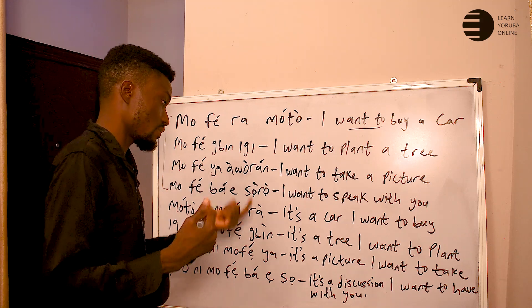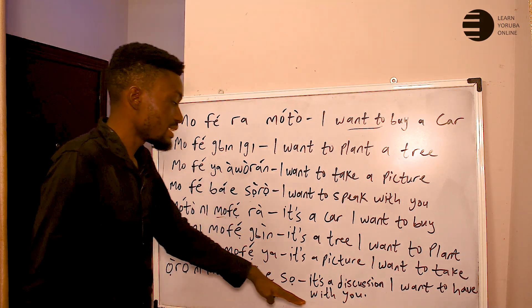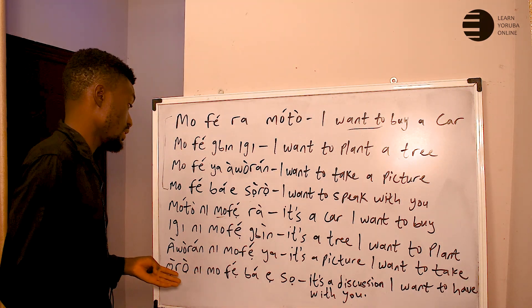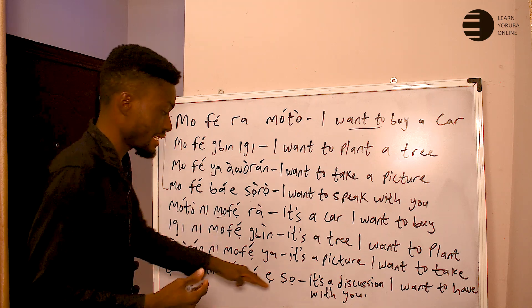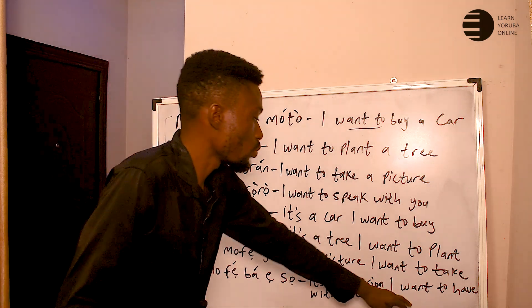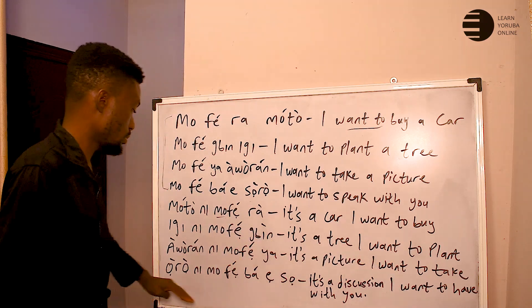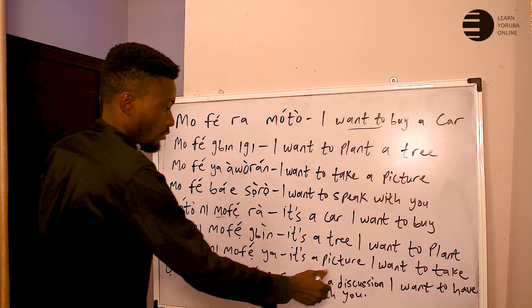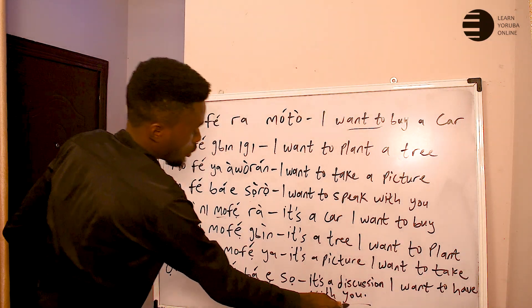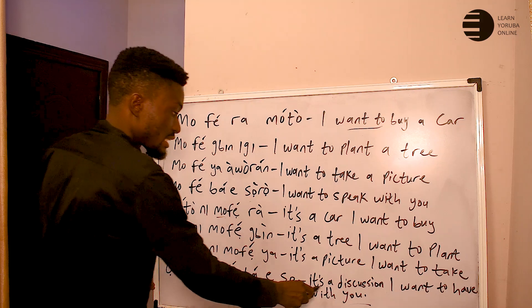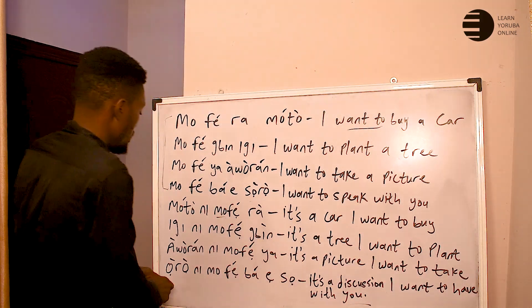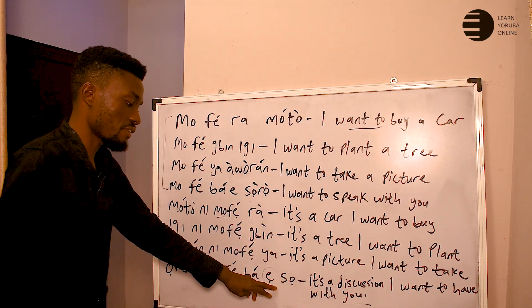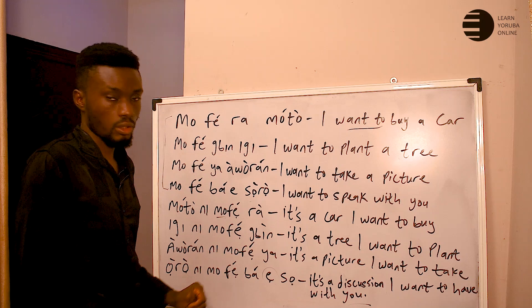'Ọrọ ni mofe ba e sọrọ' — 'it's a discussion I want to have with you.' If it is 'it's a discussion we want to have with you,' it becomes 'ọrọ ni a fẹ ba e sọrọ.' If it is 'it's a discussion we want to have with them,' it should be 'ọrọ ni a fẹ ba wọn sọrọ' — using 'wọn' instead.